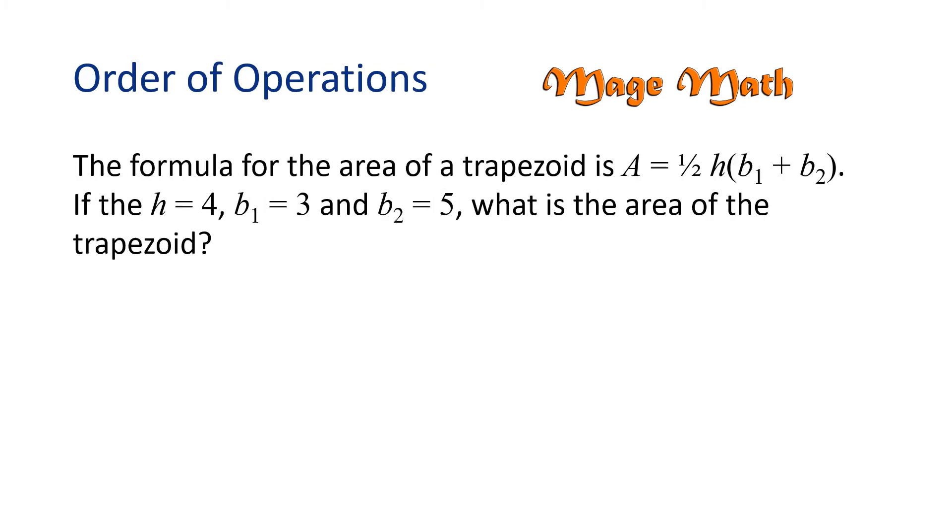The formula for the area of a trapezoid is A equals 1 half H times the quantity of base 1 plus base 2. If the H equals 4, base 1 equals 3, and base 2 equals 5, what is the area of the trapezoid?